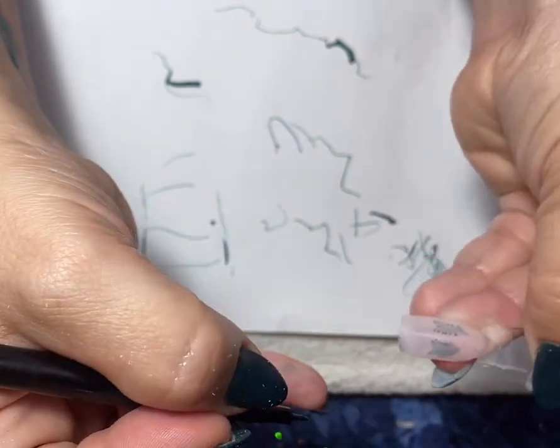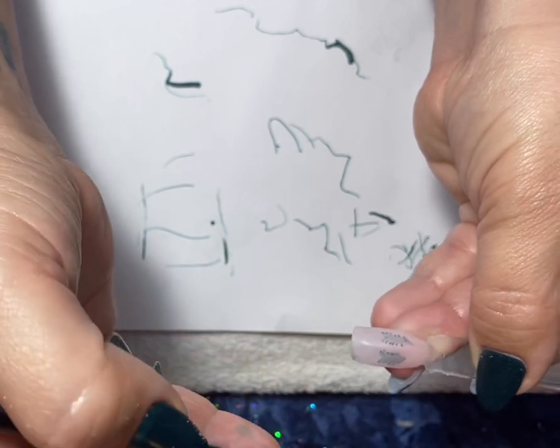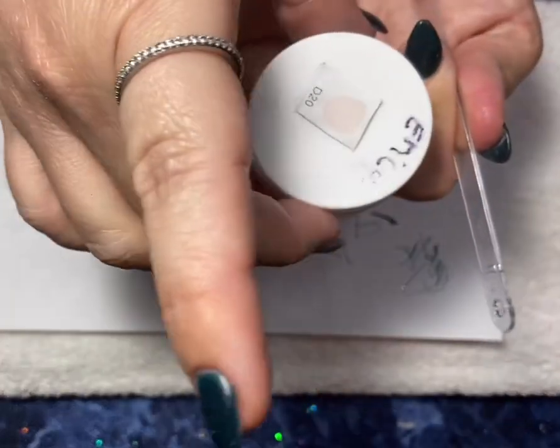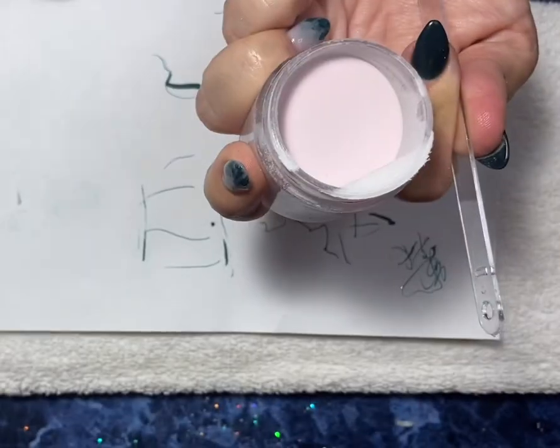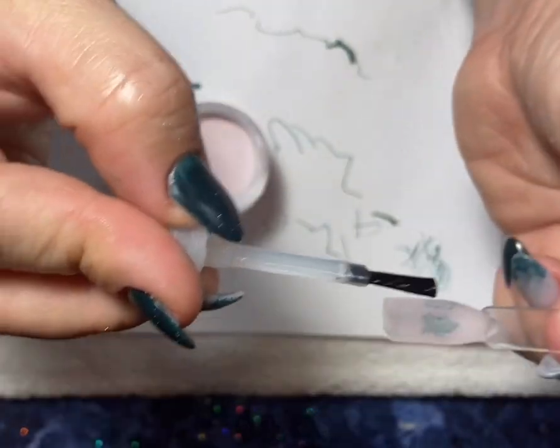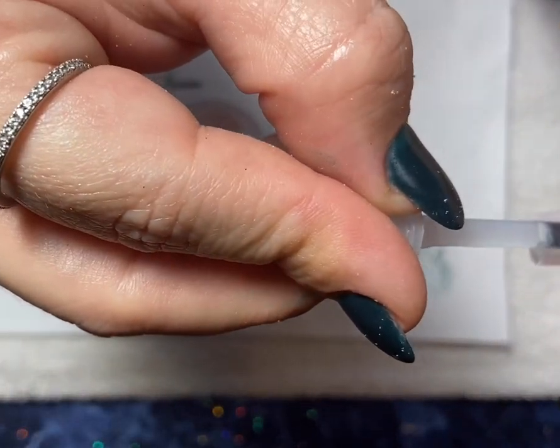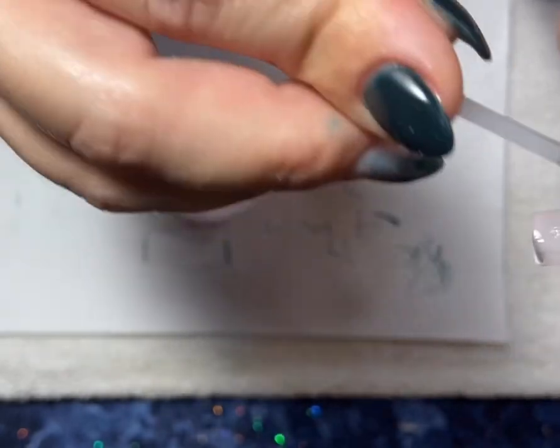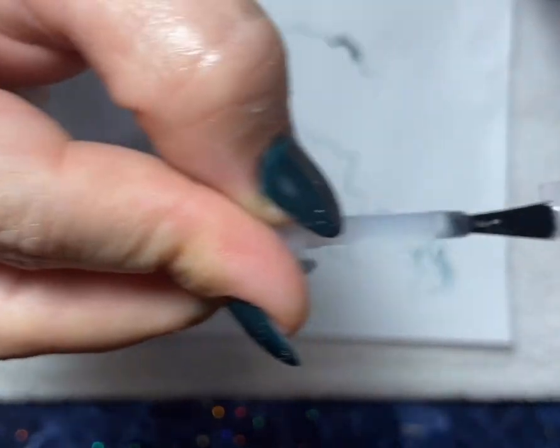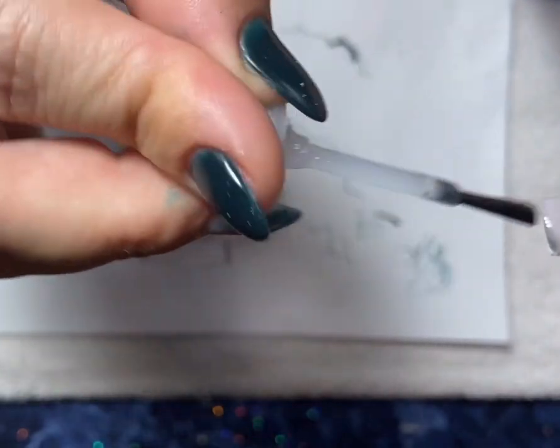Once you have them where you would like them placed, go ahead and grab your base. I'm dipping this into Revel's Erica for the misty look, so apply your base and then dip it into your Erica or any translucent colors will work for this.